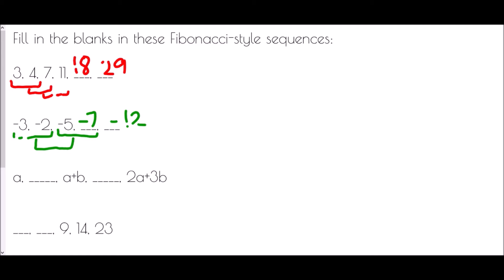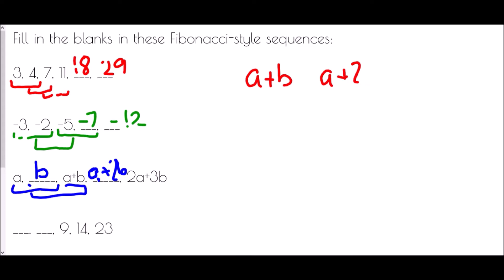In the third example we've got a little bit of algebra. We need to work out the gap, which is actually between two terms. The key is that A plus something makes A plus B, so we must have added B. Then B plus A plus B gives us A plus 2B (since B plus B is 2B). Does that work for the final term? A plus B added to A plus 2B gives 2A plus 3B, which is indeed the next term in the sequence.